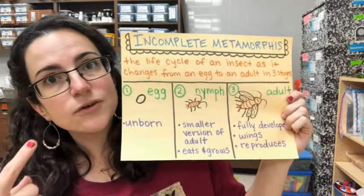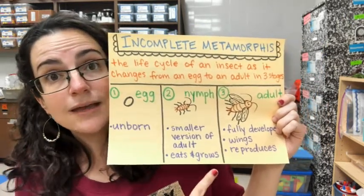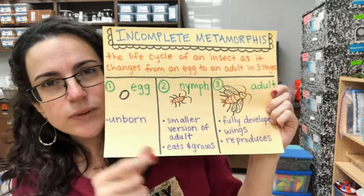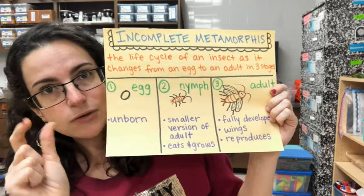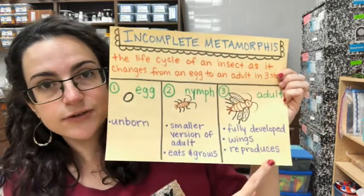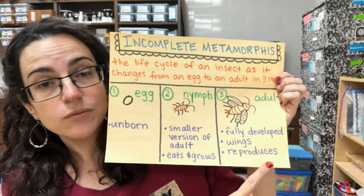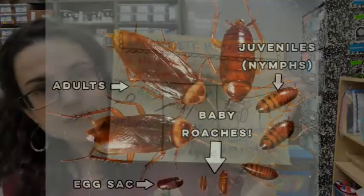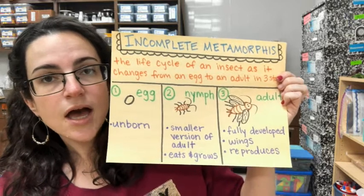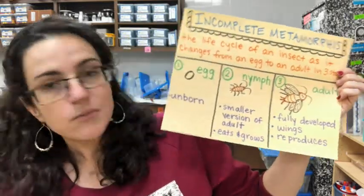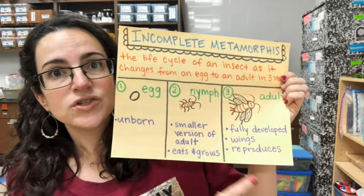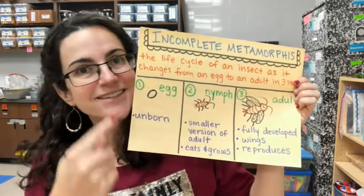They are going to eat a lot and grow in this nymph stage. Some insects might not have wings in this stage, or if they do have wings, their wings start off really small and maybe get bigger and bigger as they morph into their adult stage. The third and final stage in this incomplete metamorphosis is the adult stage — very similar to the four-stage life cycle. An adult is fully developed, they have wings, they have six legs, and they are able to reproduce and make offspring. Then they lay eggs, and the cycle continues.